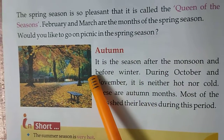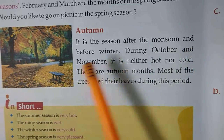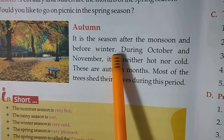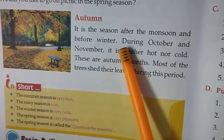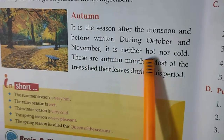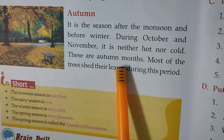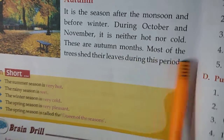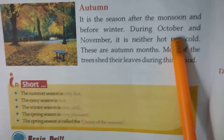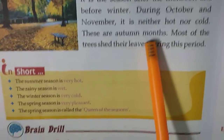Autumn: It is the season after the monsoon and before winter — during October and November. It is neither hot nor cold. Most of the trees shed their leaves during this period. In autumn, we have Durga Puja and other festivals that we celebrate.